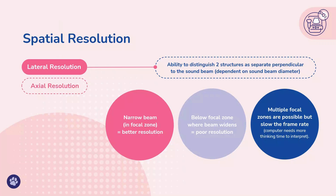Lateral resolution is our ability to distinguish two structures as separate, perpendicular to the sound beam, and this is dependent on sound beam diameter. Although we are looking at a two-dimensional image on our screen, the sound wave beam entering the animal has a thickness to it — it's not completely flat. At any given level the machine is making an average of what happens at that depth. If the beam is particularly wide we're getting an average of a lot of things and it's very inaccurate; if it's really narrow we get very good accuracy and resolution. The focal zone is the part of the sound beam with the narrowest diameter and therefore the best lateral resolution.